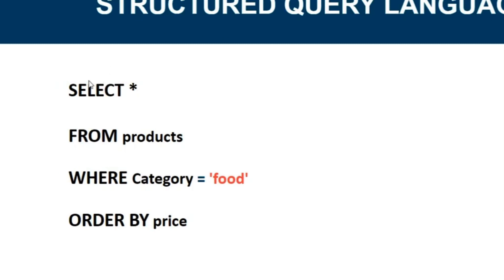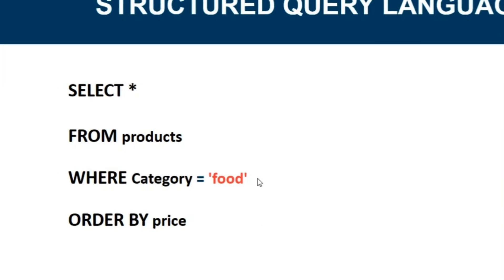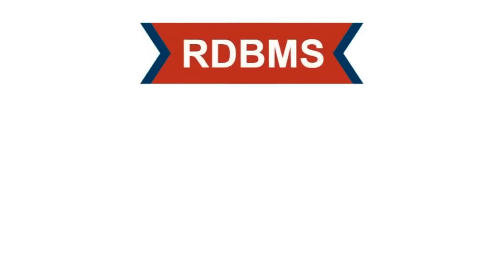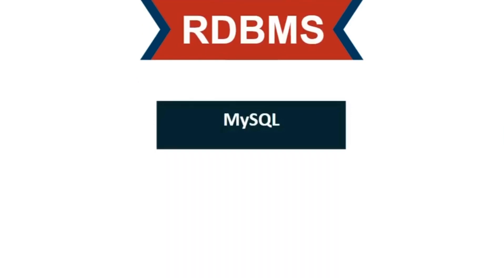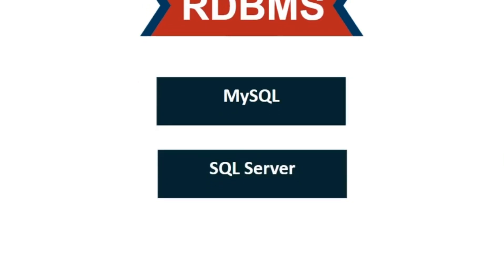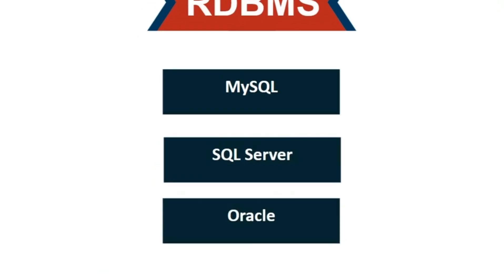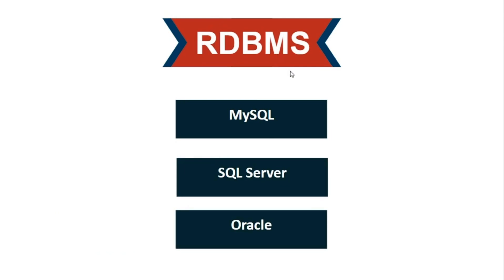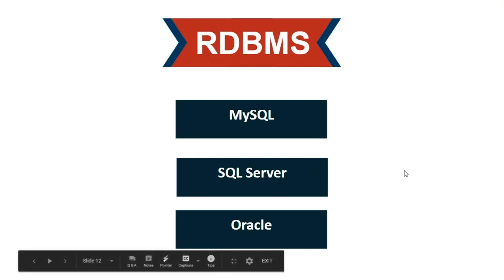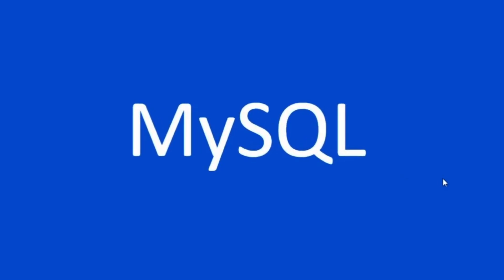So we are learning relational databases. What are some different examples of a Relational Database Management System? The first one is MySQL. Another example is MS SQL Server. There is also Oracle — Oracle is an older system. These three are very high-level relational database management systems. In this course, we are using MySQL.